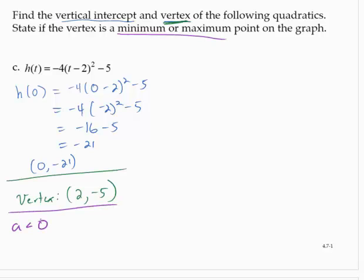All right, and since a is less than 0, a is negative. The parabola opens down, so the vertex is a maximum.